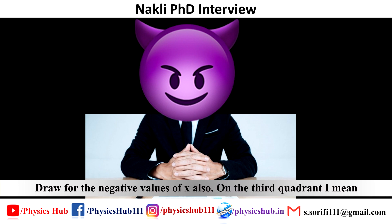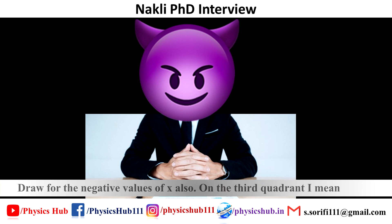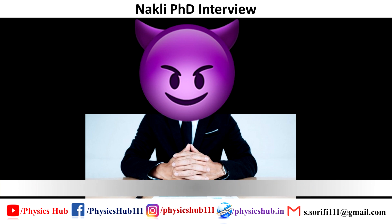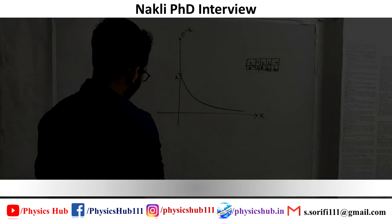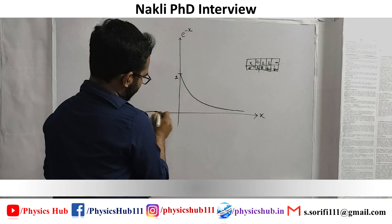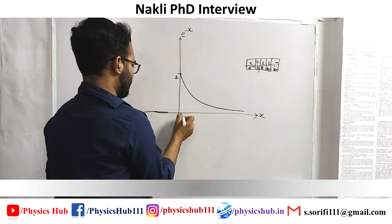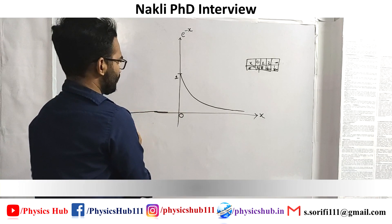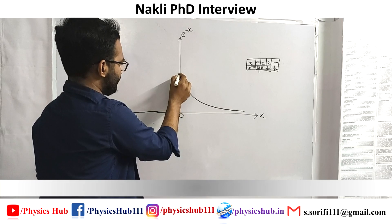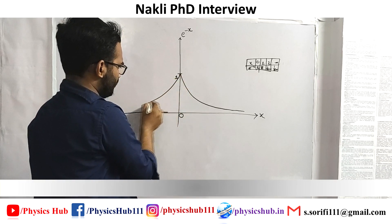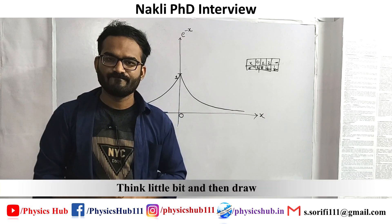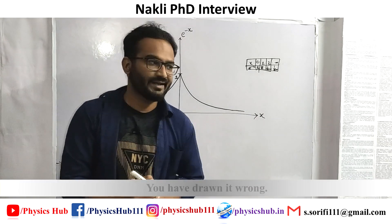That's correct. Now draw it for the negative values of x as well — on the third quadrant. Think a little bit and then draw. You have drawn it wrong. Okay, okay.